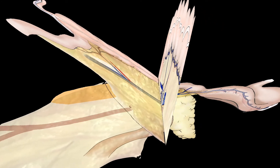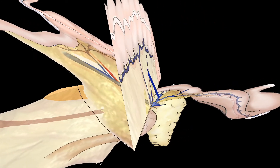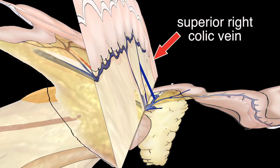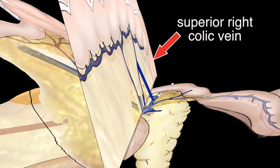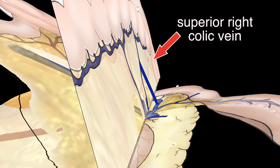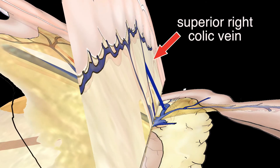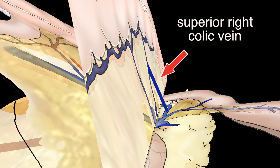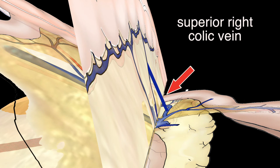Especially the preparation of the superior right colic vein is challenging. This is due to the fact that it bridges the sulcus and crosses from the transverse mesocolic page to the mesogastric page.